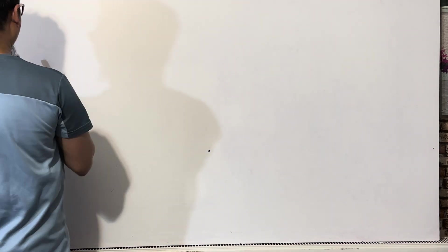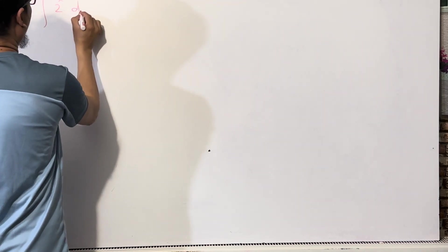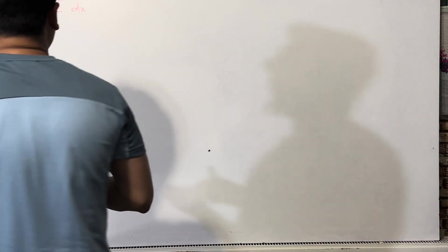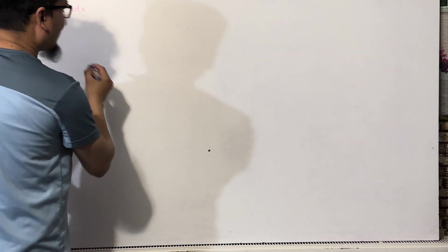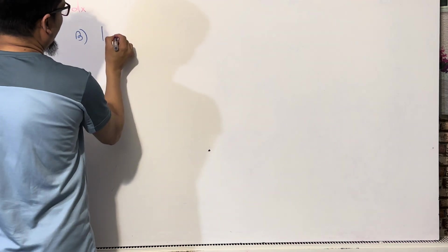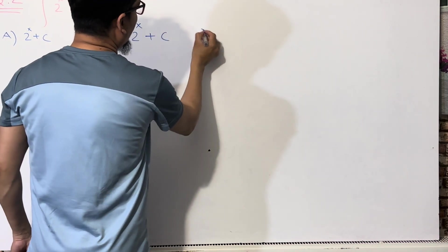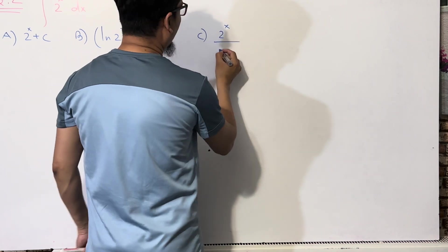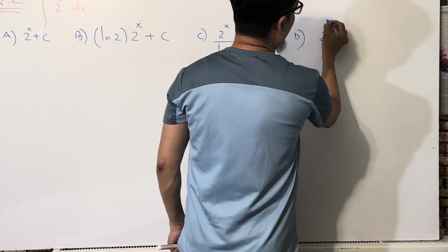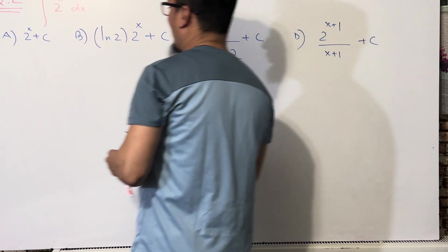The question is: the integration of 2^x dx. We have four options. Option A is 2^x + C. Option B is ln(2) · 2^x + C. Option C is 2^x divided by ln(2) + C. And option D is 2^(x+1) divided by (x+1) + C.